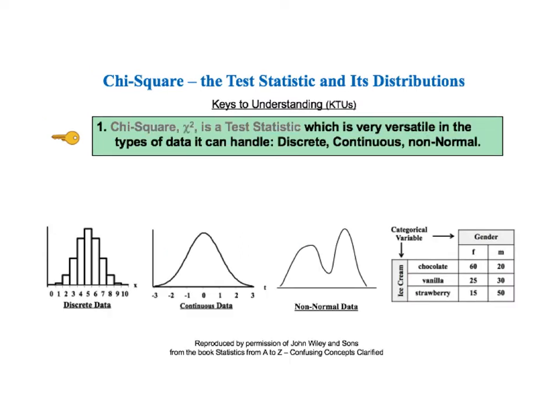KTU number 1 goes on to say that chi-square is very versatile in the types of data it can handle. Other test statistics can be fairly restrictive, but the chi-square test statistic can be used with discrete data such as counts, continuous or measurement data like temperature or weight, and it can also handle non-normal data and data in two-dimensional tables from counts of categorical data.